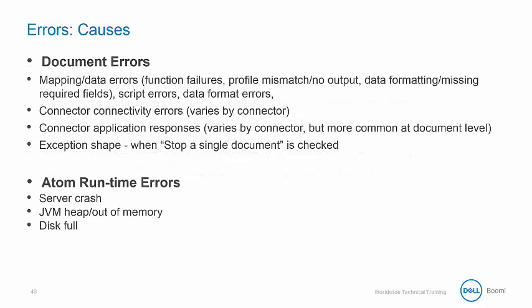Document errors are caused by mapping or data errors, script errors, or data format errors. They can also be caused by connector connectivity errors or connector application responses at the document level. Document errors can also be caused by the Exception shape when Stop a Single Document is checked. Atom runtime errors are caused by a server crash, a JVM heap out of memory, or when the disk is full.